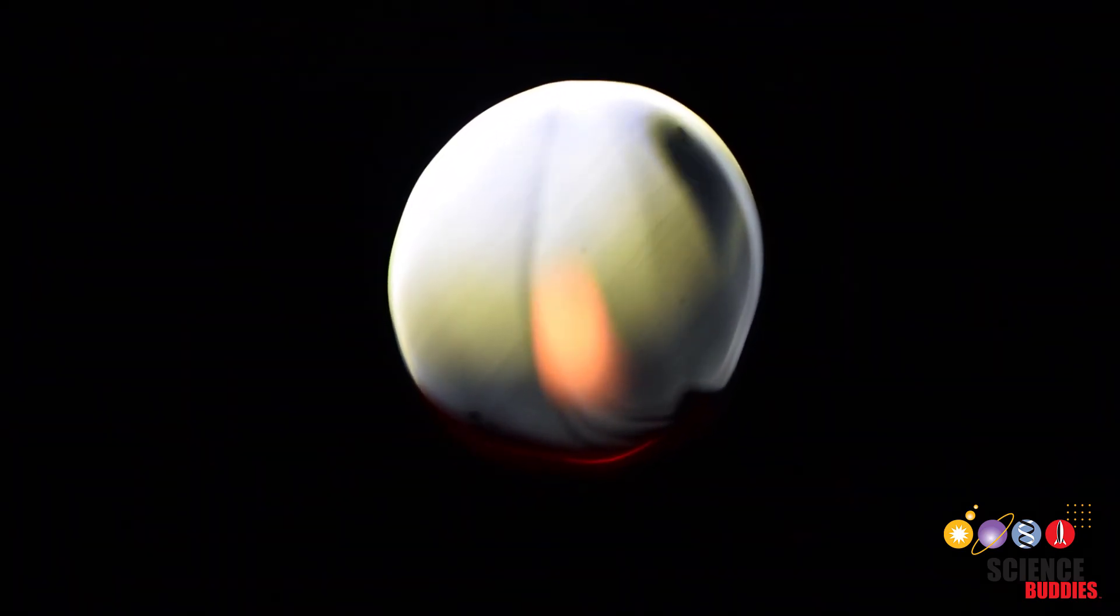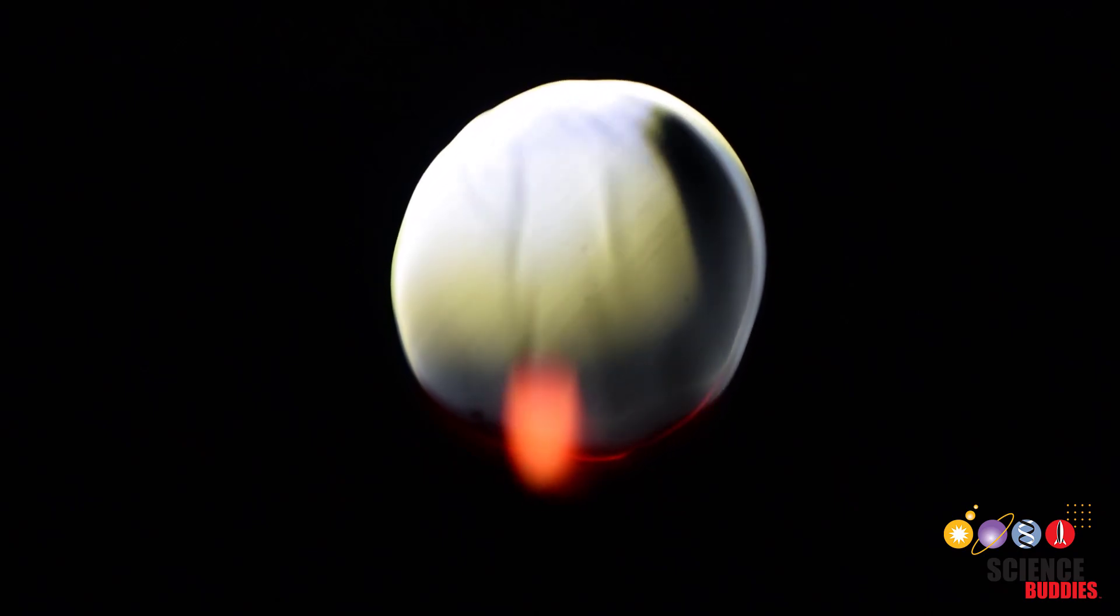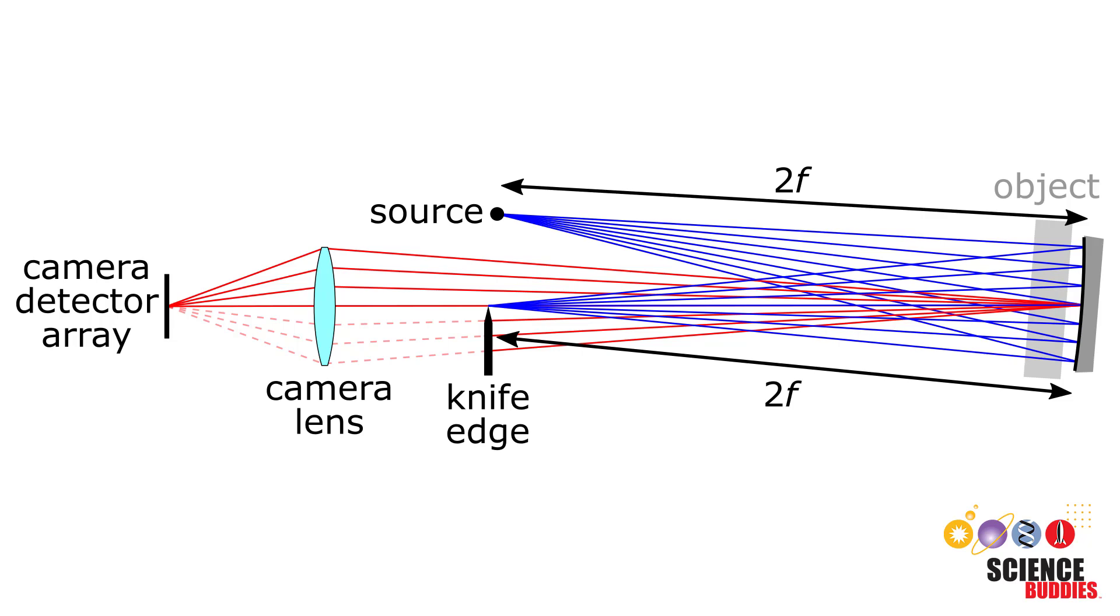I'll link to another video in the description that gives a great overview of the physics of what's going on here, but here's a basic description. A point light source is aimed at a concave spherical mirror such that the reflected light is aimed at a camera.